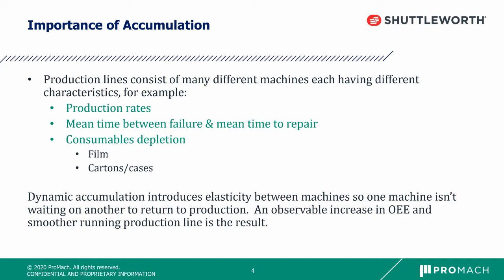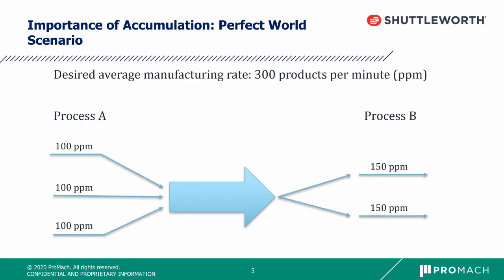Your goal should be each machine running at its most efficient rate, and having accumulation can help. To drive this point home, we are going to focus on an extremely simple example. Let's say a facility's goal is to produce 300 products per minute, which require two major processes, A and B. Process A takes a little while longer than process B, so the line requires three machines running at 100 products per minute each. Process B doesn't require as much time, so the machines which perform process B can run efficiently at 150 products per minute. In a perfect world, as shown here, all the processes are humming along and life is good. The accumulation and balancing system never accumulates product because they are being consumed by process B machines as fast as process A is producing them.